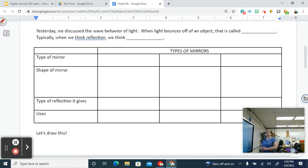So yesterday we discussed the wave behavior of light. When light bounces off of an object, that's called reflection. Typically, when we think about reflection, we think of mirrors. So there are three types of mirror that you need to know.